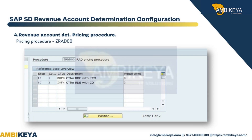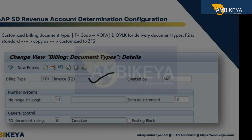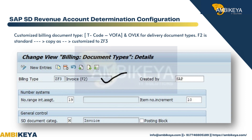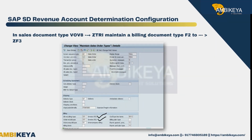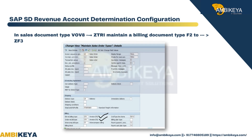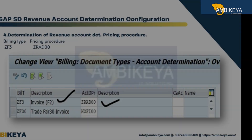Revenue Account Determination Pricing Procedure: ZRAD00. Customize billing document type using T-code VOFA, and OVLK for delivery document types. F2 is the standard — copy it and customize to ZF3. In sales document type VOV8, for ZTRI, maintain billing document type F2 changed to ZF3.